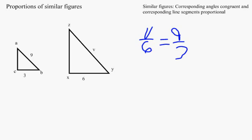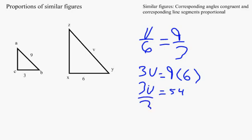Next, you set it up as 3V equals 9 times 6. Then you carry down the 3V and solve 9 times 6, which equals 54. Then you divide 3 from each side. That leaves V alone, and 54 divided by 3 equals 18.